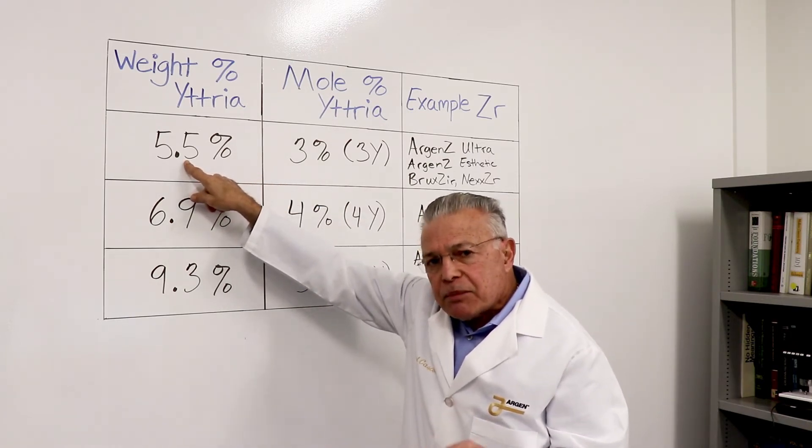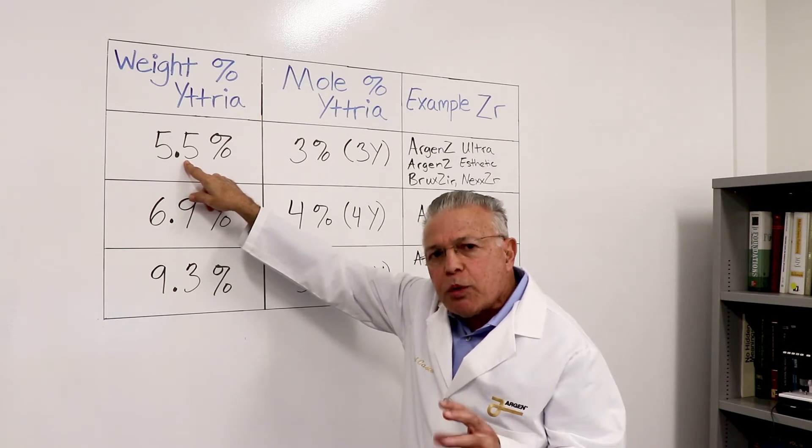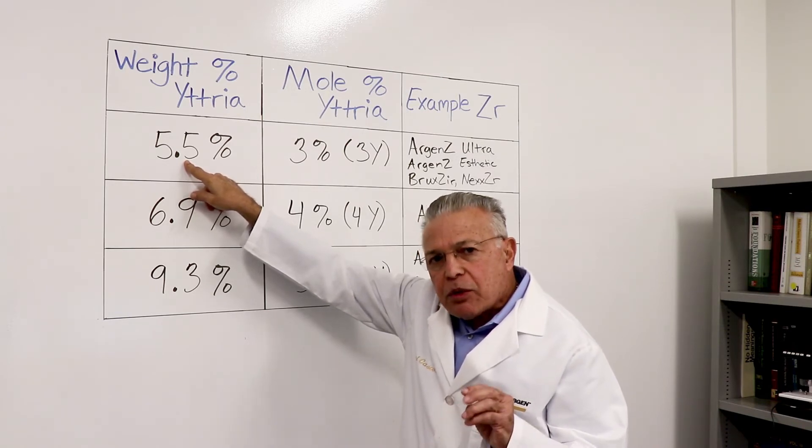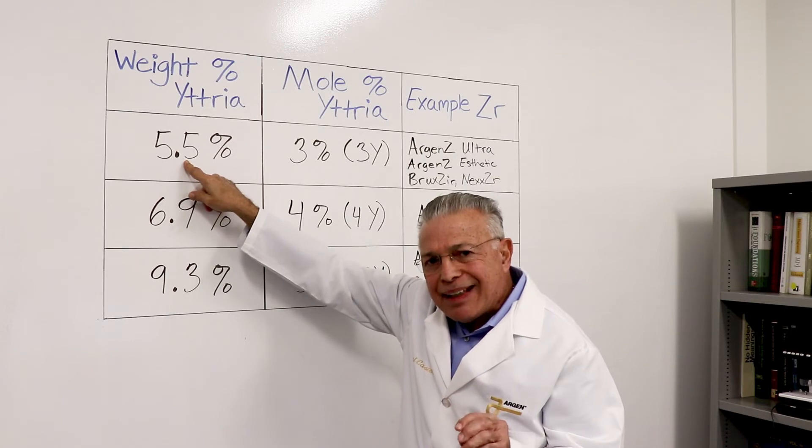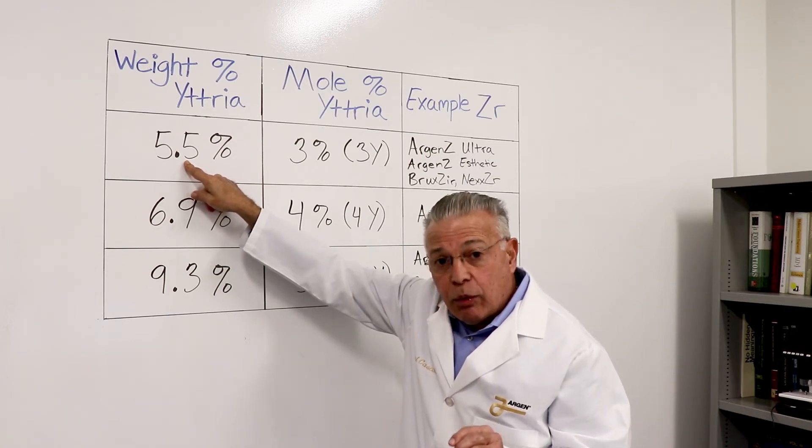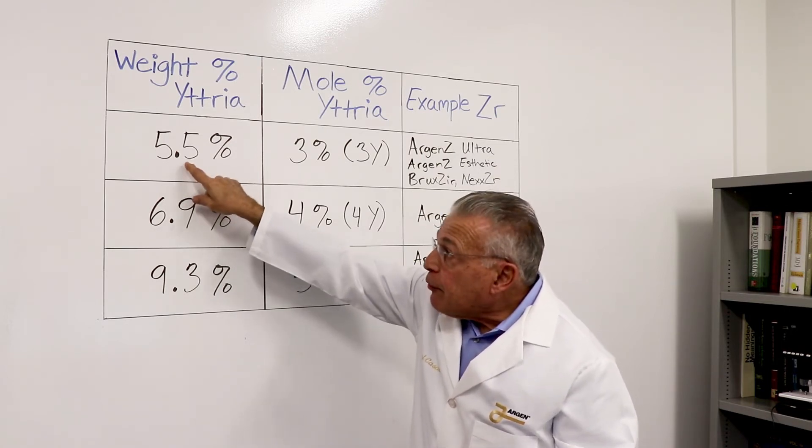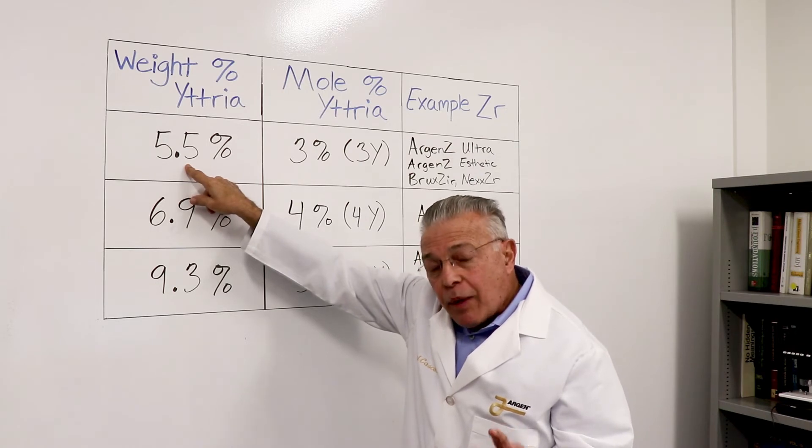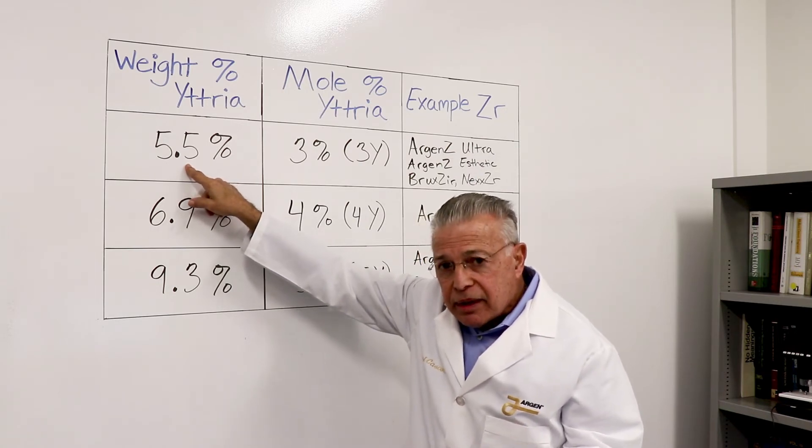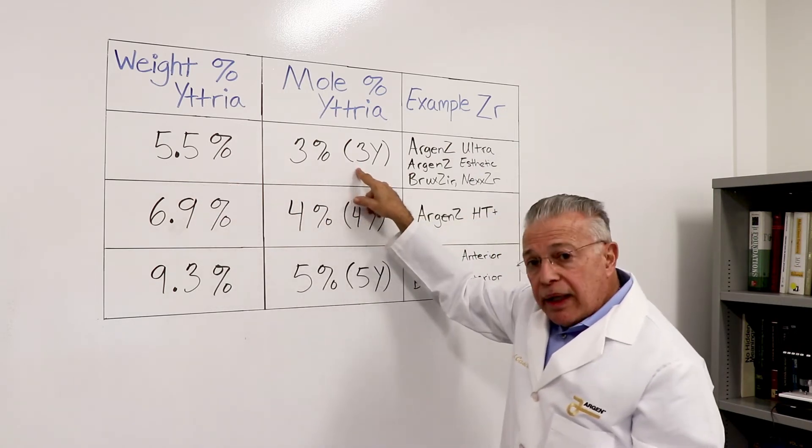In most cases, the label will show you a range and the range is because the ceramics cannot be made as exact as the alloys are. So a 5.5 percent weight percent yttria zirconia is a 3Y material.